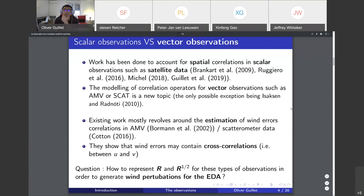Existing work mostly revolves around the estimation compared to the modeling of wind error correlations in AMV and scatterometer data. When they estimate these errors, they always show that there are some cross-correlations, so it is of interest to have a new correlation model to account for these cross-correlations.